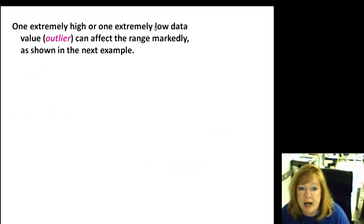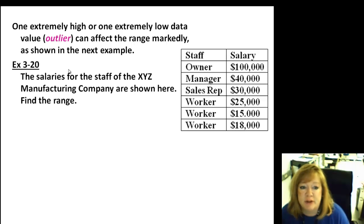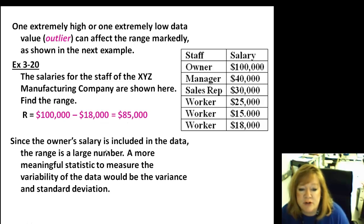So if we look here, one extremely high or low data value, that's called an outlier, can affect the range markedly as shown in the next example. And if you remember the activity with teacher salaries, you had that one really big value that really does affect your data. So here's the salaries of the XYZ manufacturing company. The owner is $100,000, and the worker bee down here, one of the worker bees is $18,000. This should say $15,000. So you can see there's a big range in the salary. It should be $100,000 minus $15,000 equals $85,000.